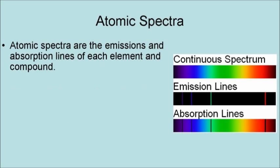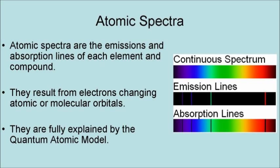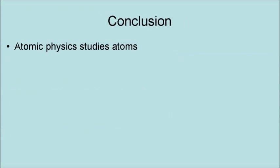Atomic spectra are the emission and absorption lines of each element and compound. They result from electrons changing atomic or molecular orbitals. They are fully explained by the quantum atomic model.